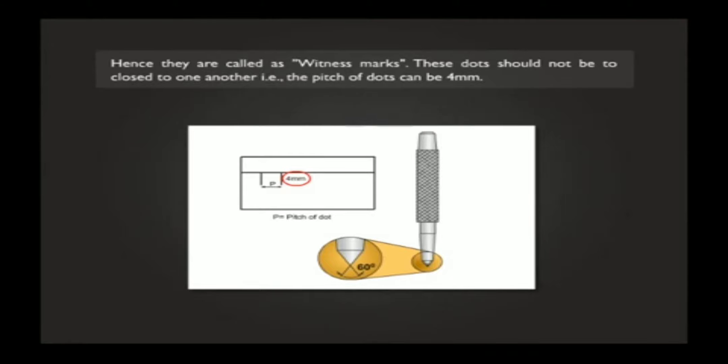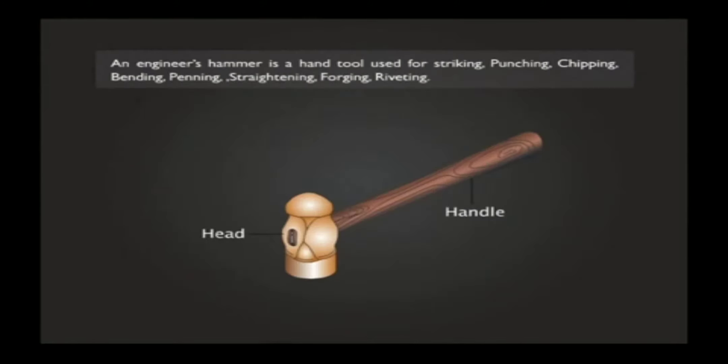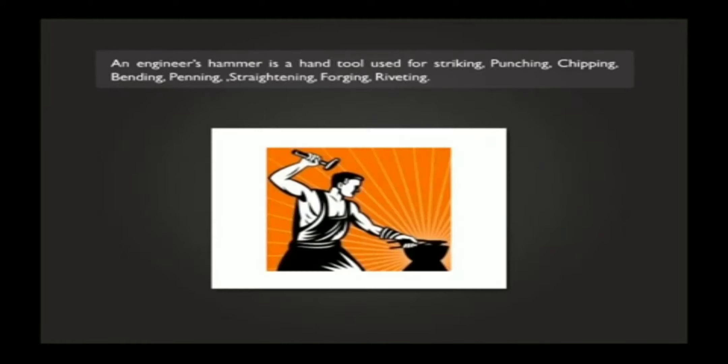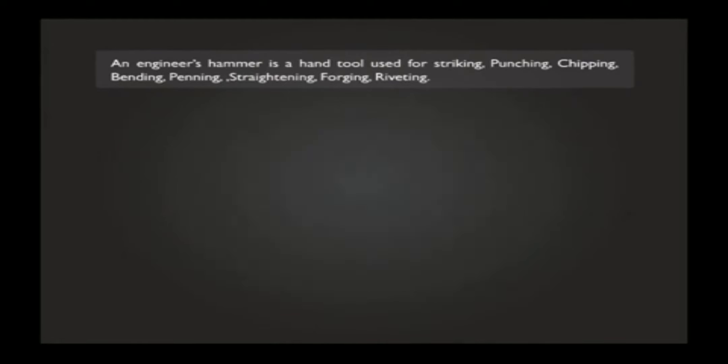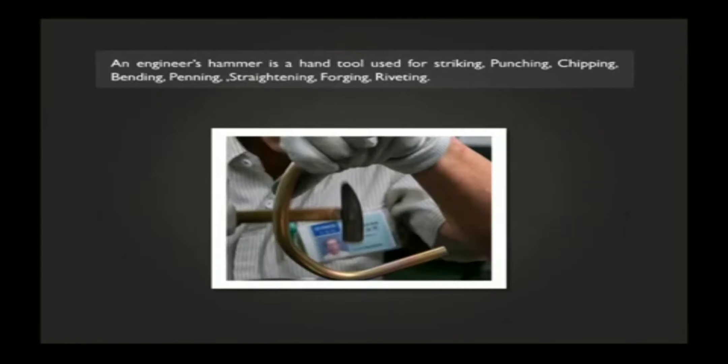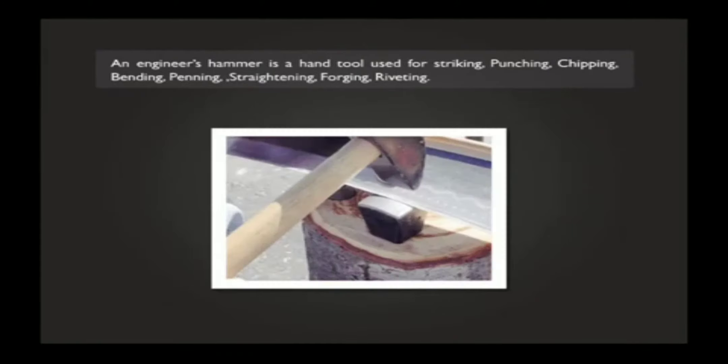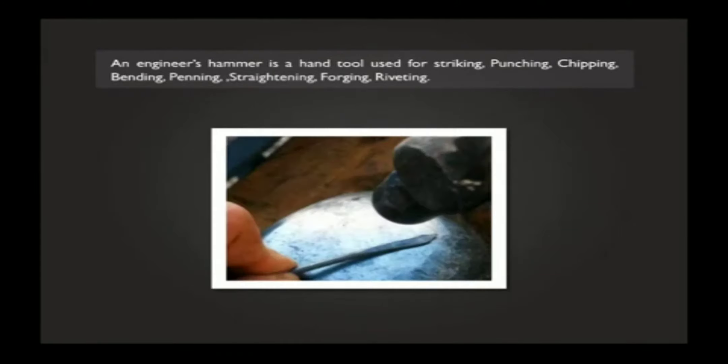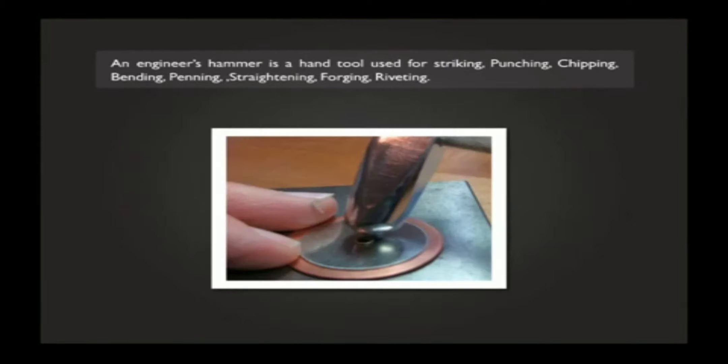An engineer's hammer is a tool used for striking, punching, chipping, bending, peening, straightening, forging, and riveting.